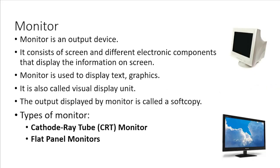First of all we will discuss about the monitor. Monitor is the most commonly used output device. It consists of a screen and different electronic components that display the information on the screen. Monitors are used to display text, graphics and video in different colors. It is also called visual display unit. The output displayed on a monitor is called soft copy.